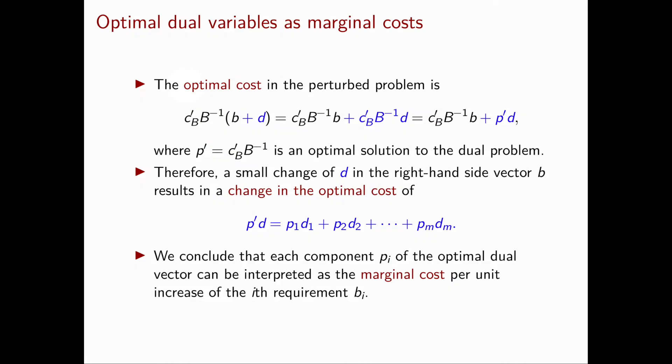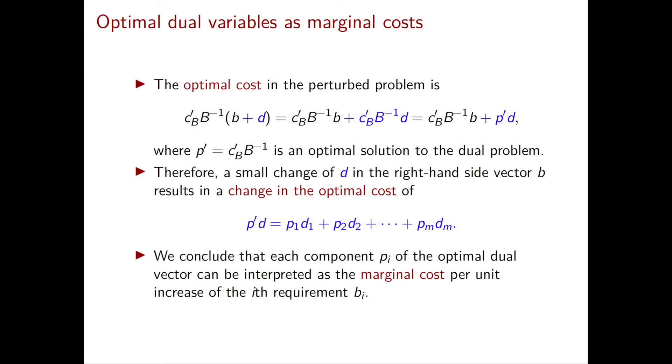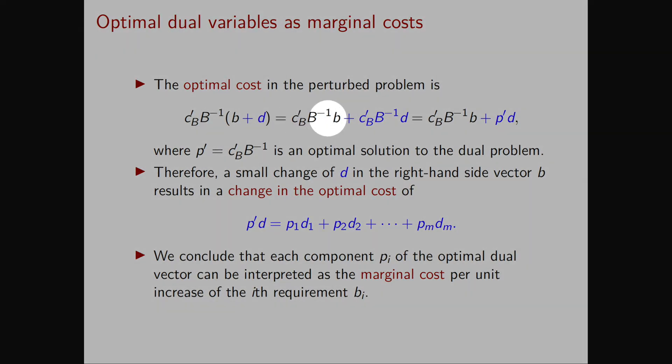Now I want to look at the optimal cost in our perturbed problem. As always, our formula for the optimal cost is CB transpose times B inverse times the right-hand side of our equality constraints. So in the original problem, it was only B and now it's B plus D in the perturbed problem. So I'm going to write in blue here the new part, which is present in the perturbed problem, but is not present in the original problem. If we perform the multiplication, we obtain CB transpose B inverse B plus CB transpose B inverse D.